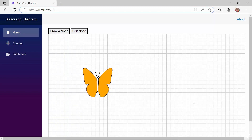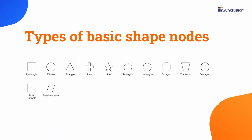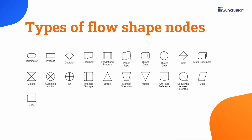Next, you will see basic shapes and flow shapes. The Syncfusion diagram component supports 12 basic shapes and 21 flow shapes. Refer to the video linked in the card above to see how to create basic shape and flow shape nodes.